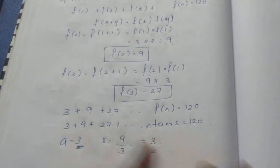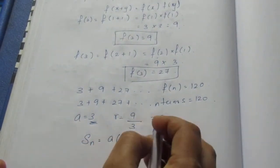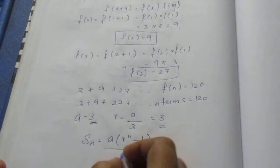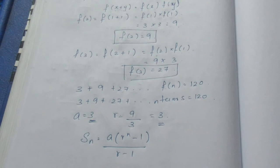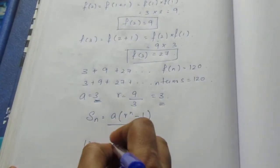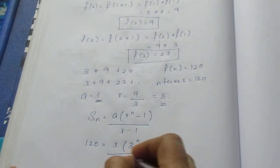For this we can use the GP sum formula. Sn equals a times (r^n minus 1) divided by (r minus 1), since r is greater than 1. We know Sn equals 120, so 120 equals 3 times (3^n minus 1) divided by (3 minus 1).